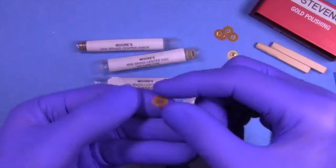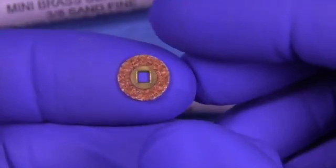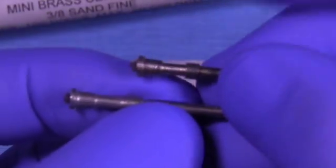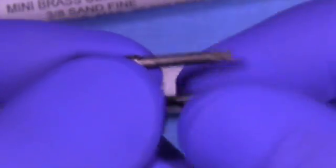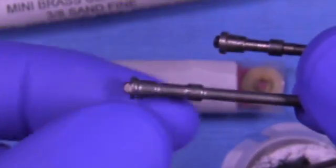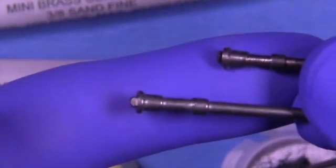Talk a little bit about our discs. These are the Moore's mini discs, only three-eighths of an inch. They have a little metal grommet in the middle. One side has the abrasive and the other side does not.